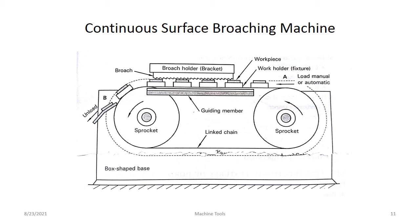In operation, workpieces are loaded into the work holders at loading station A, where they are clamped either manually or automatically. The workpiece on the travelling chain passes between the broach and the guiding plate. The excess metal is removed from the workpiece, and the finished piece is unloaded or rejected at station B. Unloading and reloading take place continuously without any break, and hence this type of machine is suitable for mass production applications.